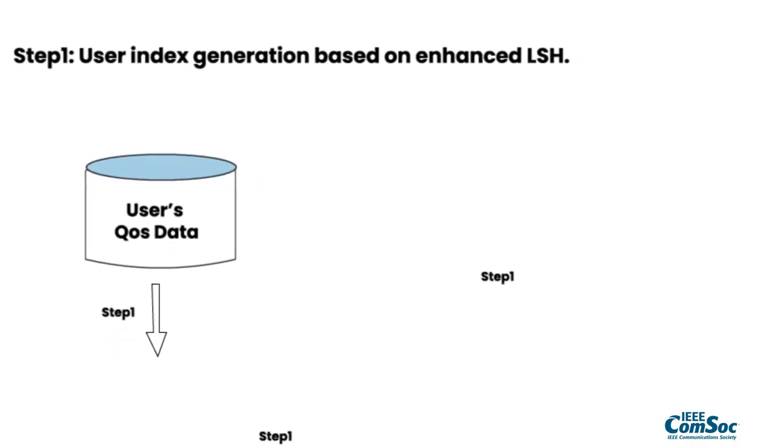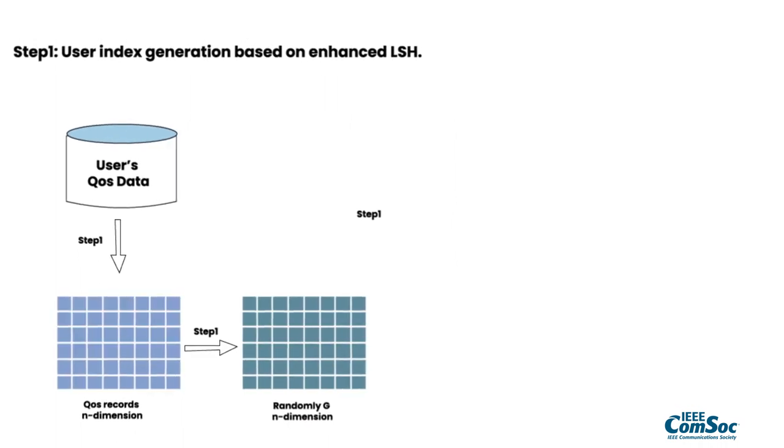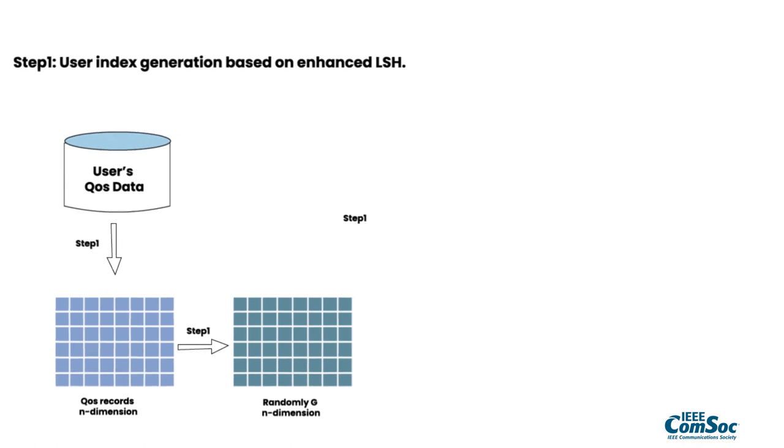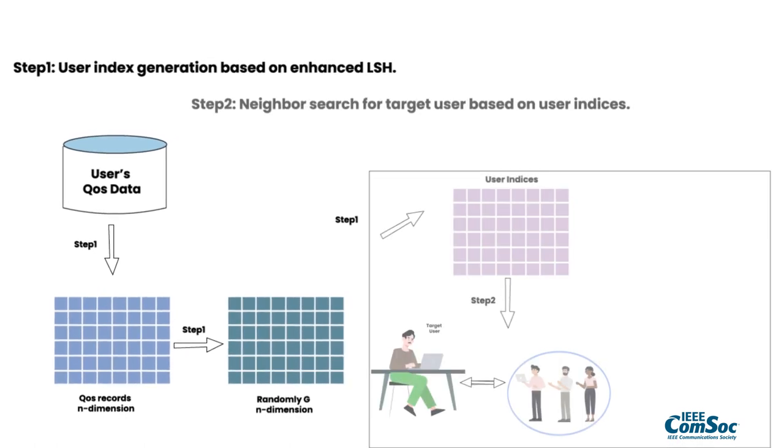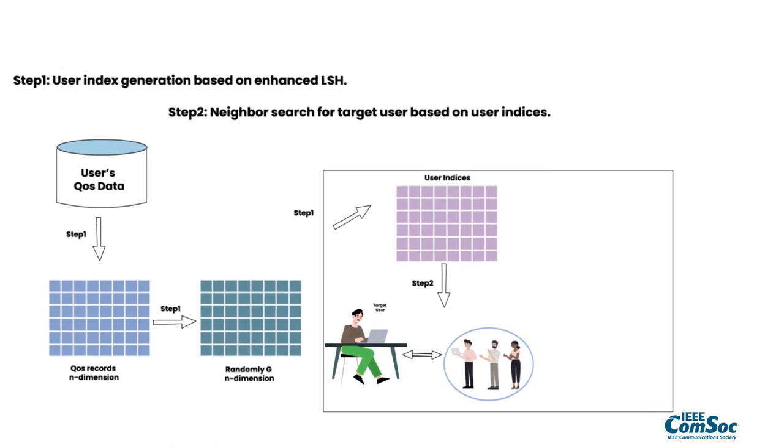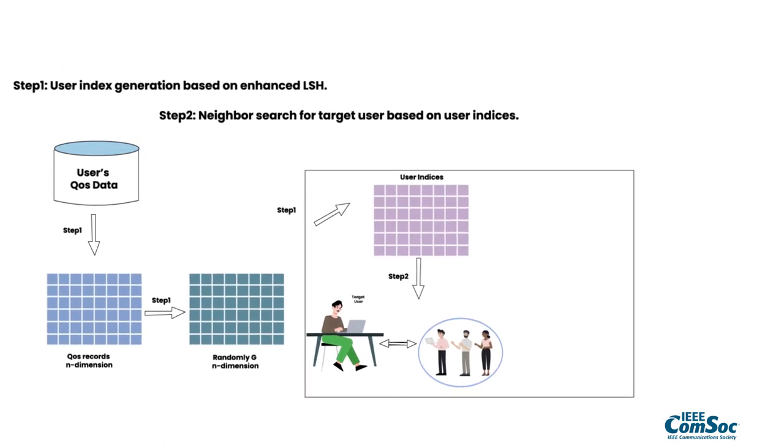First, for each platform hosting QoS data, we generate user indices with little privacy based on enhanced LSH. Second, according to the derived and less sensitive user indices, we look for the target users' neighboring users.